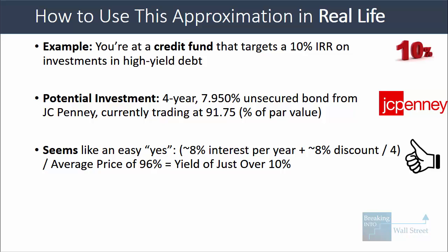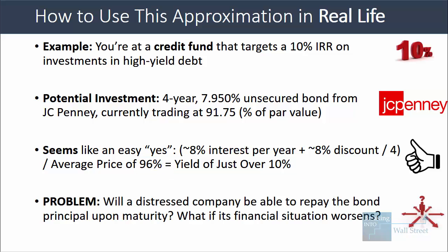Dividing that 10% by an average price of about 96% — the average between 92% and 100% — gives a yield just over 10%, since 10% divided by a denominator less than 100% pushes the result above 10%. That looks like an easy yes on paper. But the problem is that a distressed company like JCPenney may or may not be able to repay the bond principal at maturity — what if cash flows worsen, or it can't refinance when the debt comes due? You have to think about those types of risks.